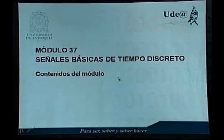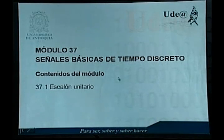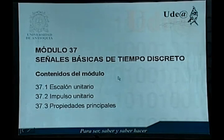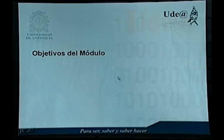Hoy continuamos con el estudio del capítulo 7 sobre discretización de señales, con el módulo 37, Señales Básicas de Tiempo Discreto. Los contenidos que vamos a ver en este módulo son escalón unitario, impulso unitario y las propiedades principales de estas señales básicas de tiempo discreto.